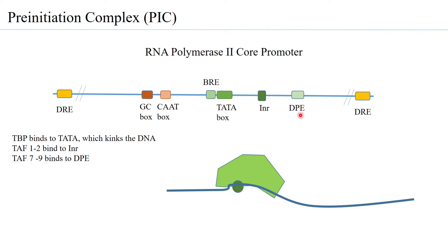If a promoter does not have INR and DPE but has say the MTE or the DCE, the TAFs of TF2D are able to bind to these cis-acting elements as well. Primarily, if it is a TATA box-containing promoter, binding of TBP to the TATA box is the first step; if the promoter lacks a TATA box, it is still TF2D binding to the core promoter that begins formation of the pre-initiation complex.